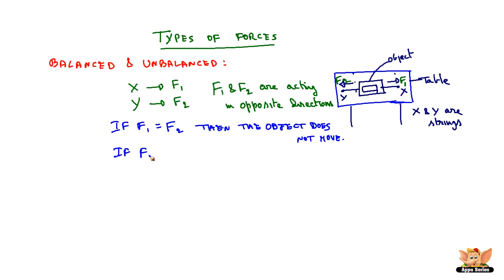If F1 is less than F2, then the object moves towards left. If F1 is greater than F2, then the object moves towards right, because the F1 by X string is more effective, so it pulls the body towards the right.